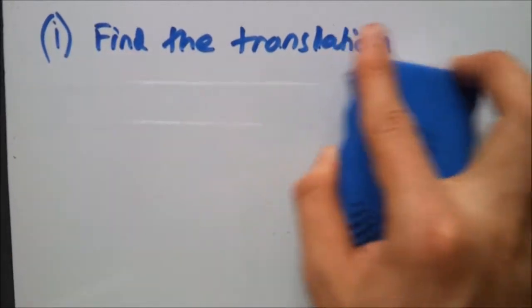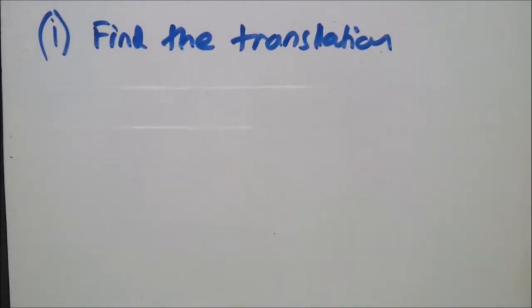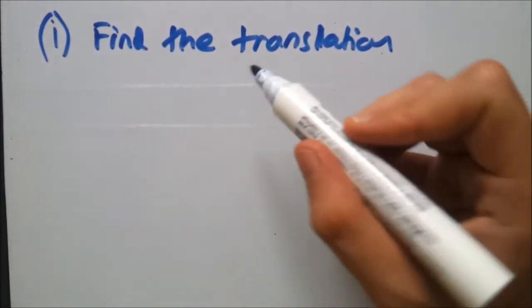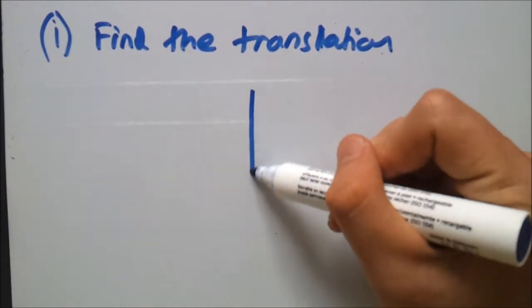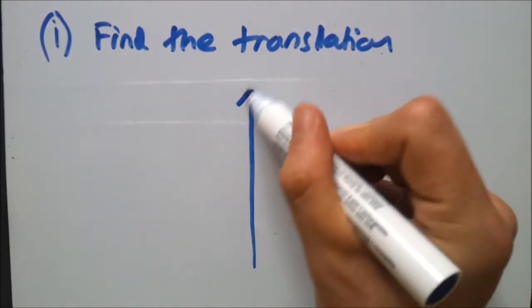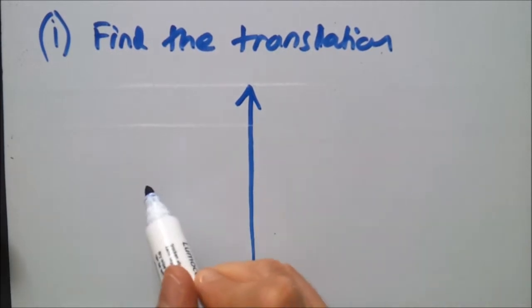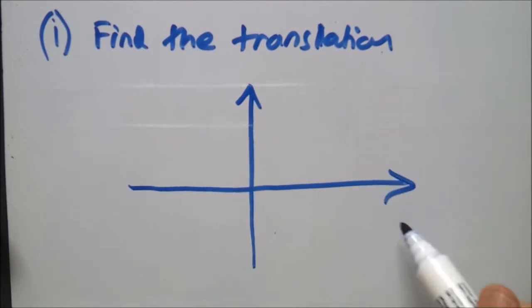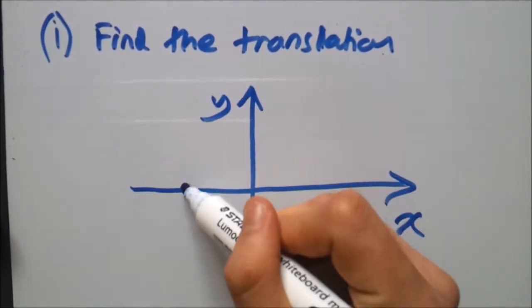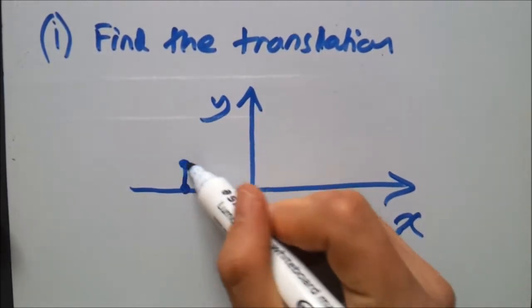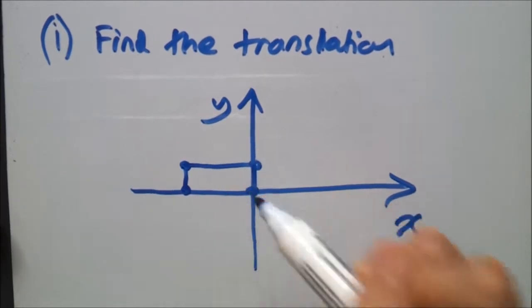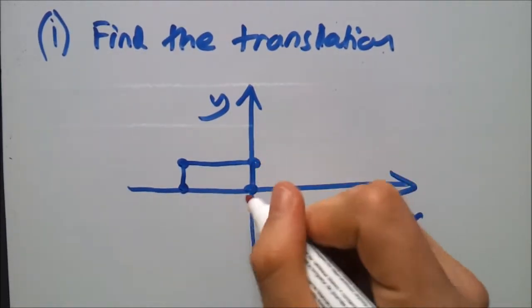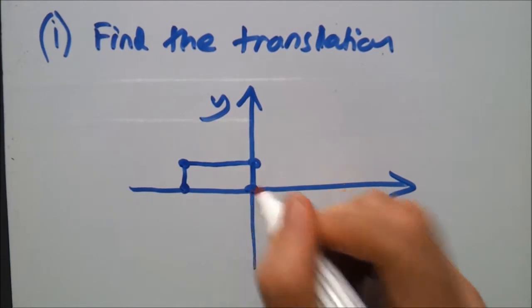So in your notepad or your sketchbook, first you draw the XY graph. This is just a whiteboard so you can't expect it to be accurate. Now in here, imagine we had a shape, a rectangle, and first is right on the corners.